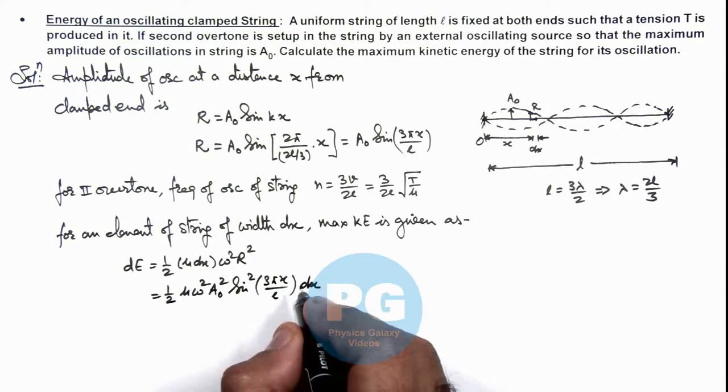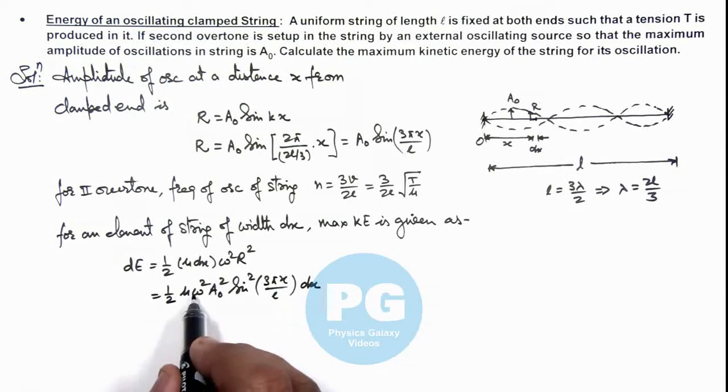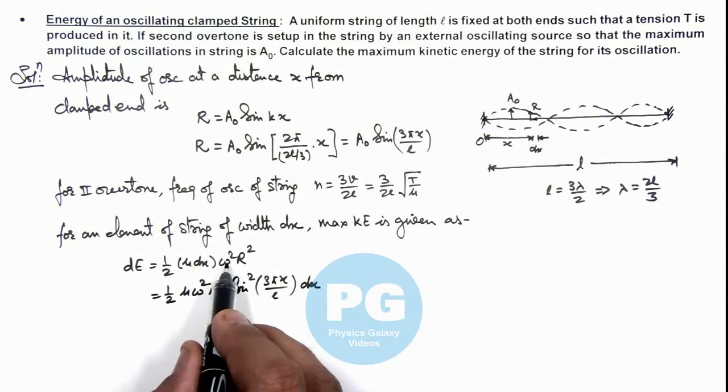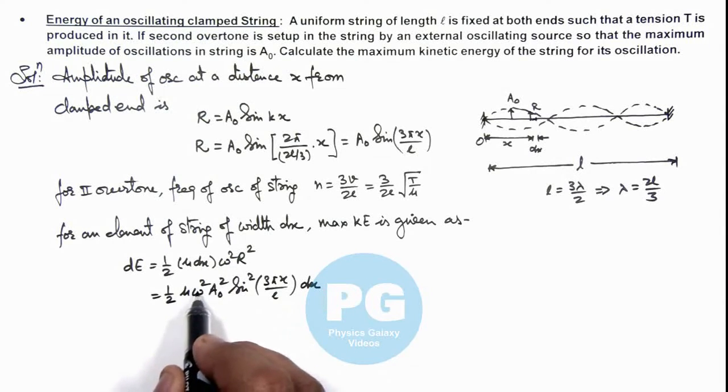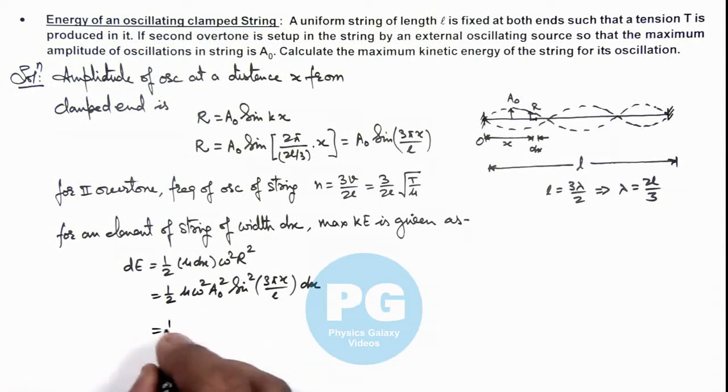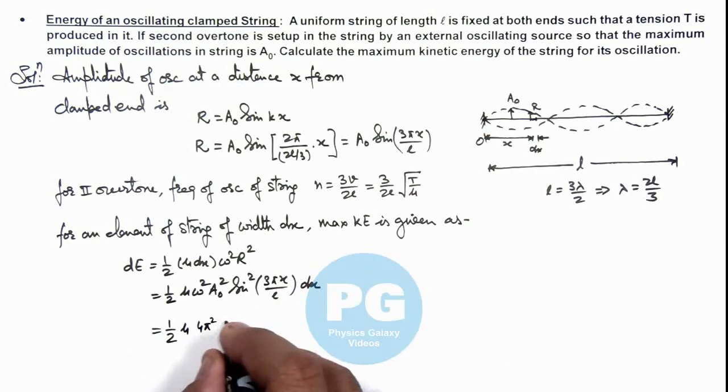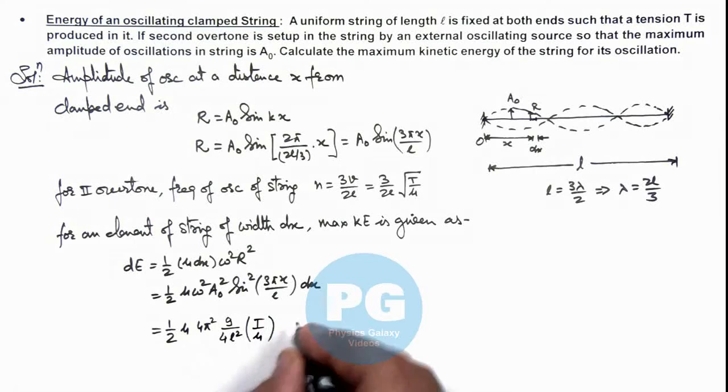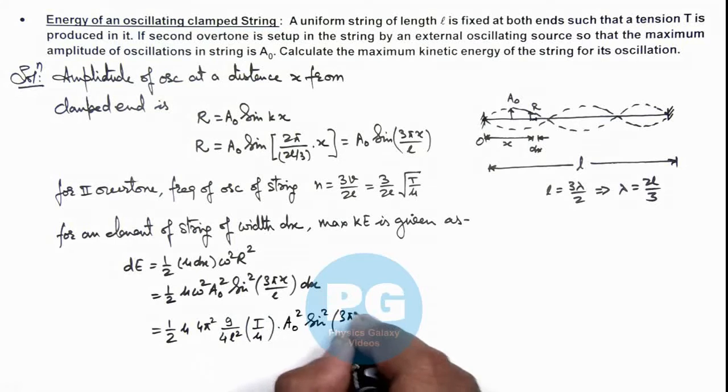Now in this situation, here if we substitute the value of ω also, which will be 2πn, so ω² will be 4π²n². If this value of n we put it here, this gives ½μ and ω will be 2πn, so this squared will be 4π² multiplied by n² here is 9/(4l²) multiplied by T/μ, multiplied by A₀² sin²(3πx/l) dx.